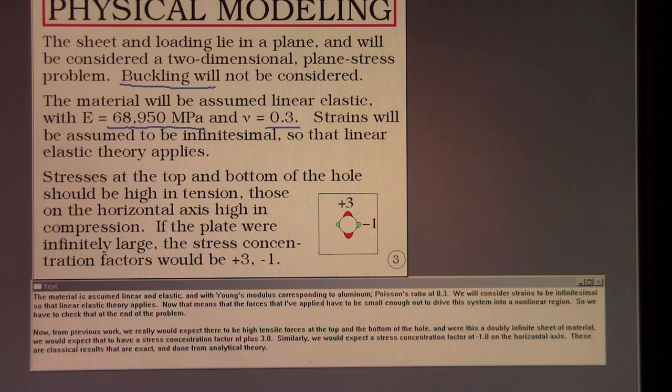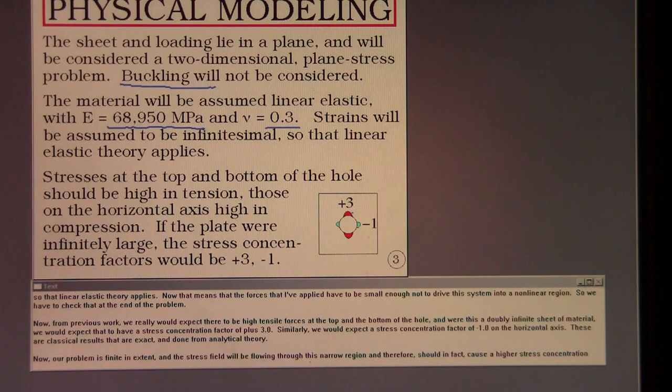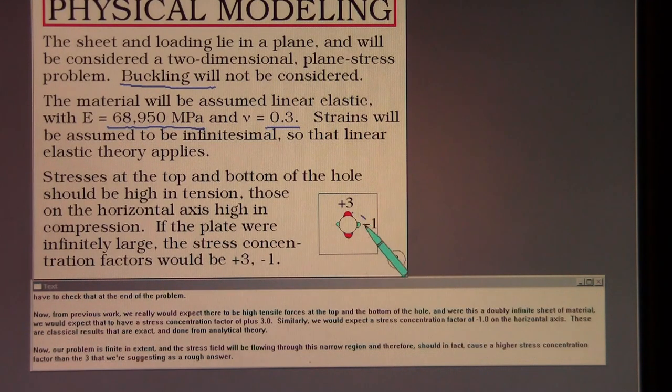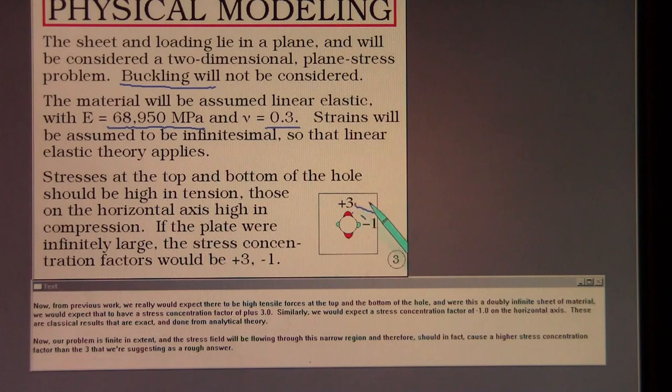Now from previous work, we really would expect there to be high tensile forces at the top and the bottom of the hole. And were this a doubly infinite sheet of material, we'd expect that to have a stress concentration factor of plus three. Similarly, we would expect a stress concentration factor of minus one on the horizontal axis. These are classical results that are exact and done from analytical theory. Now our problem is finite in extent and the stress field will be flowing through this narrowed region and therefore should in fact cause a higher stress concentration factor than the three that we're suggesting as a rough answer.